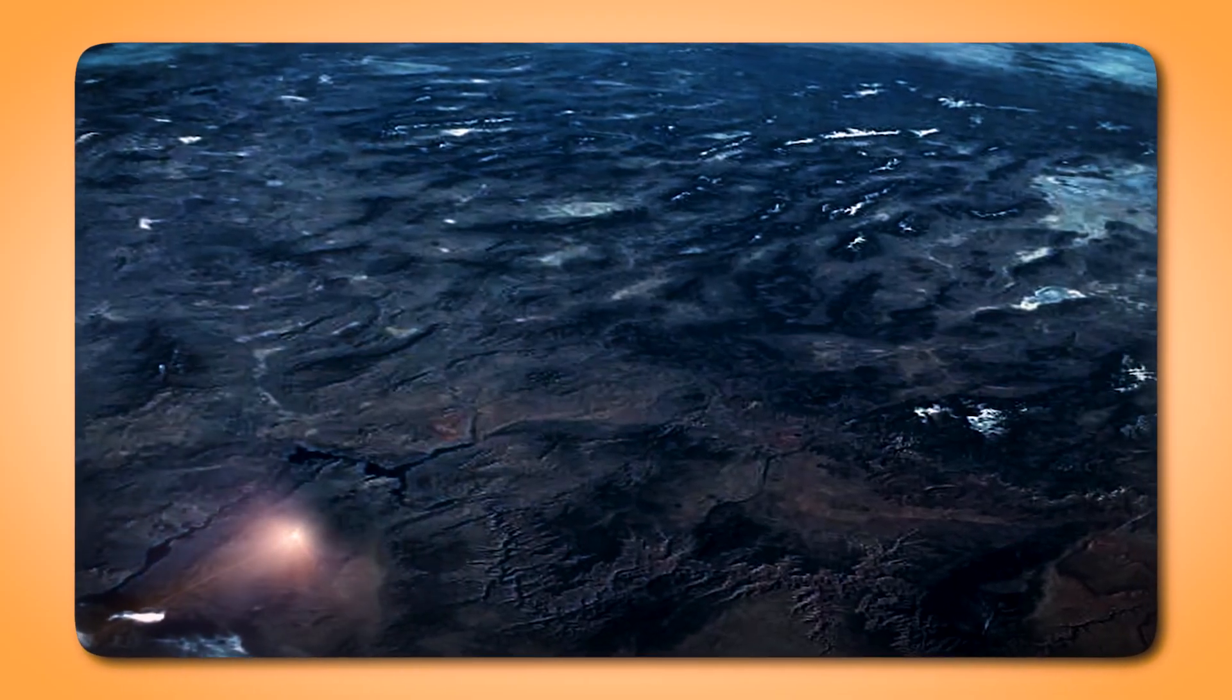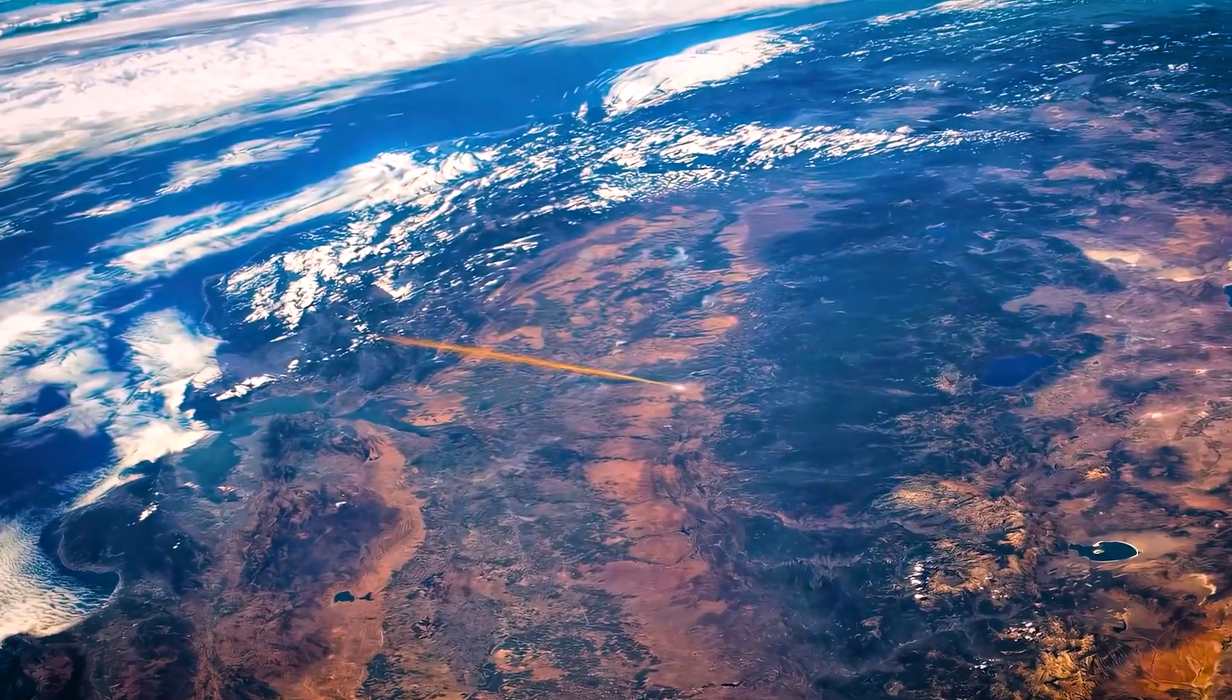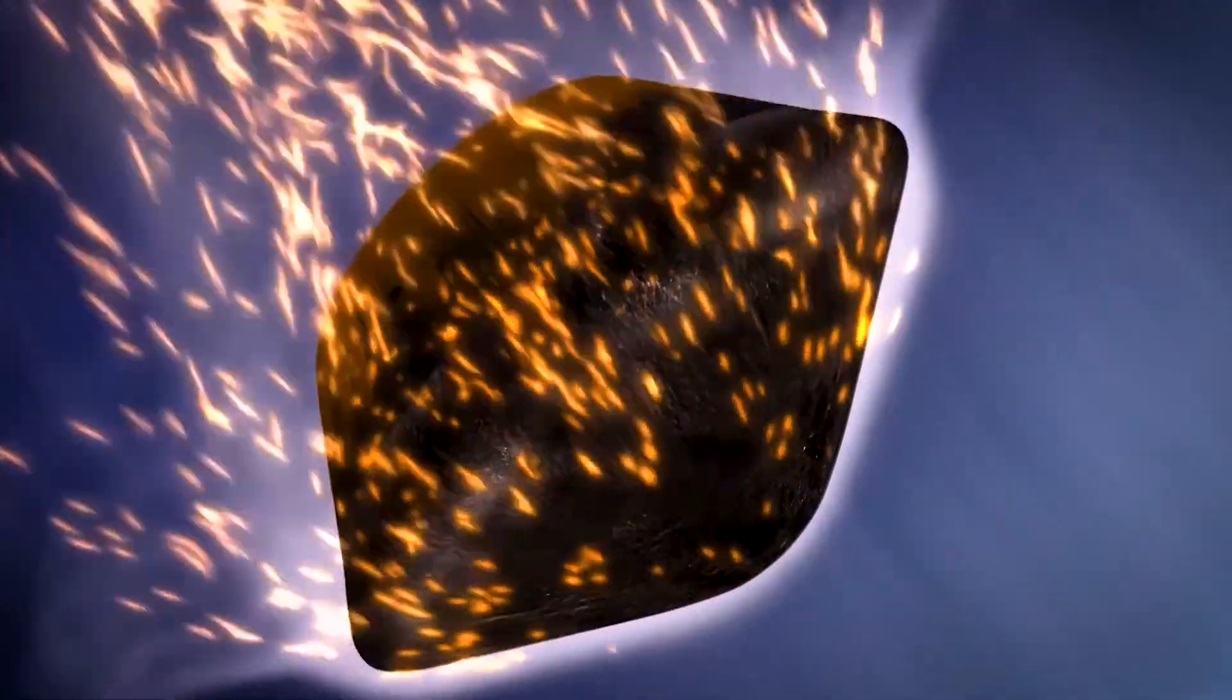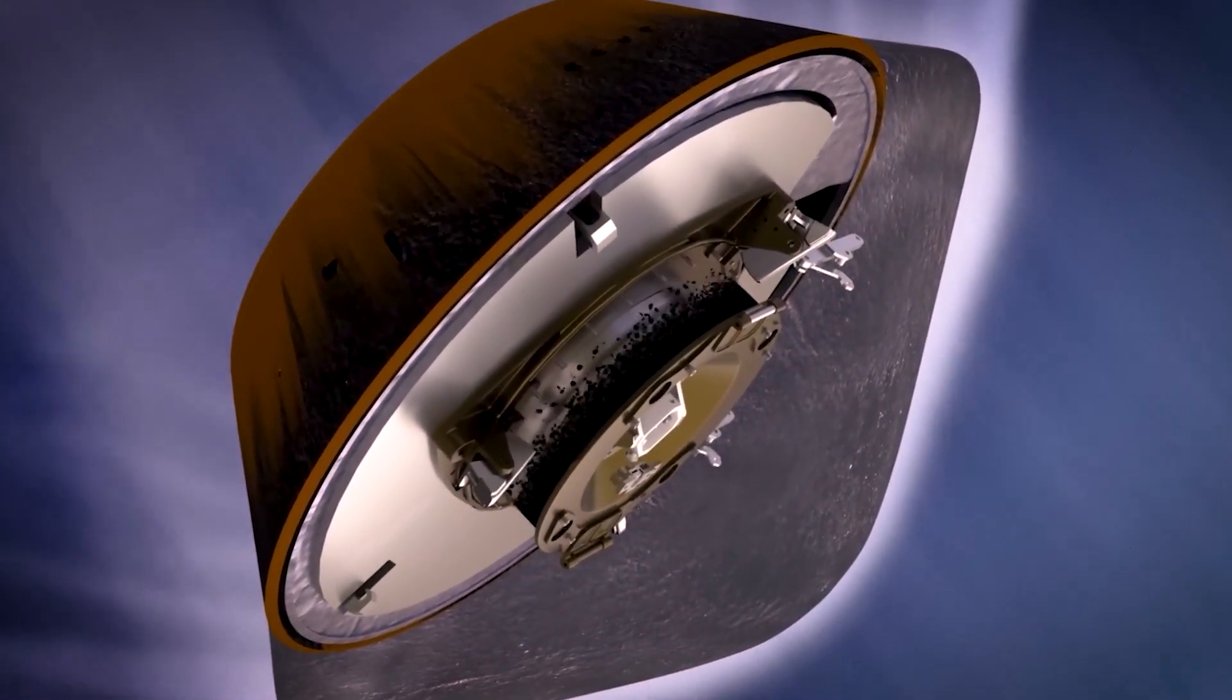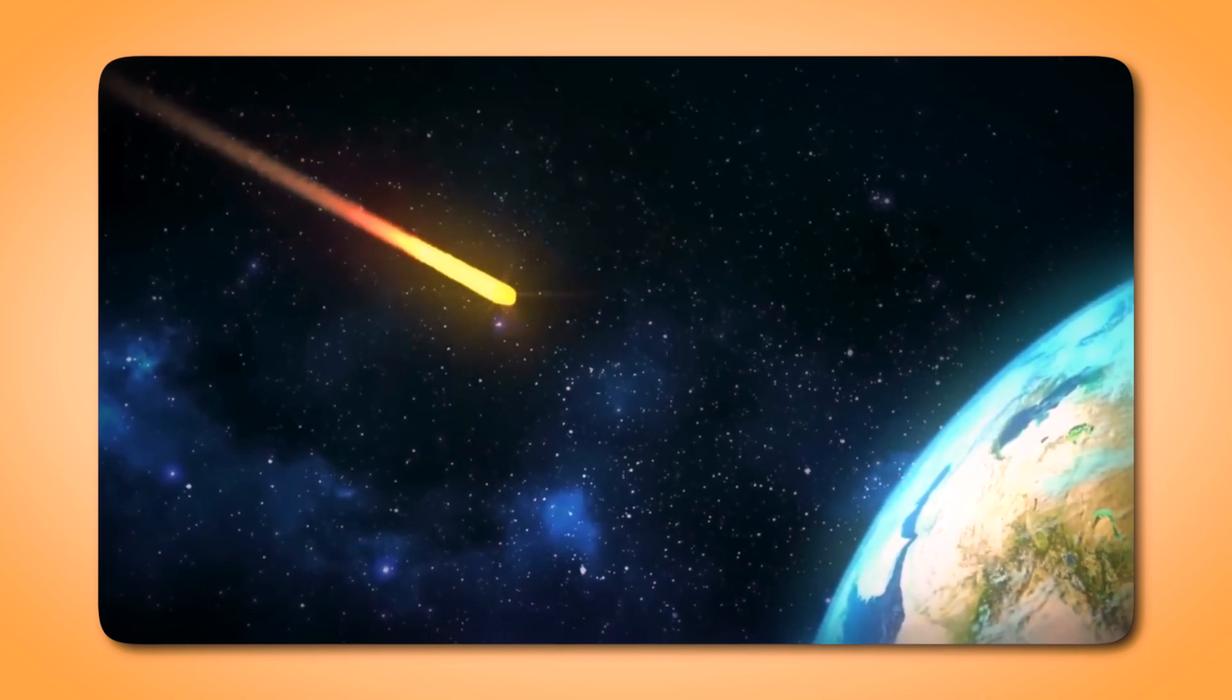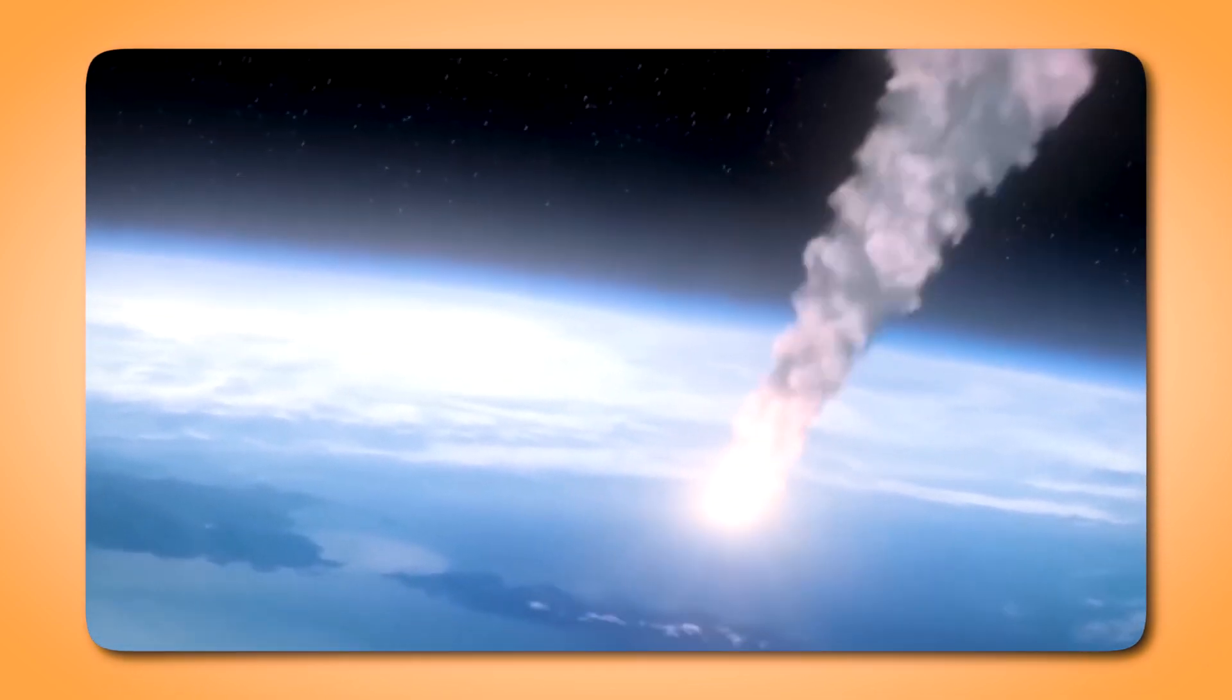The scalding hot capsule blazed through Earth's atmosphere, reaching peak temperatures of approximately 2,700 degrees Celsius, nearly half as hot as the surface of the Sun. Ground-based infrared trackers followed its fiery descent, while the 120 gram sample of asteroid Bennu inside remained shielded from these extreme conditions by an advanced thermal protection system known as PICA, phenolic impregnated carbon ablator. PICA, a cutting-edge ablative heat shield, dissipated more than 99 percent of the vehicle's kinetic energy, keeping the interior temperature below 75 degrees Celsius and preserving the sample's integrity.